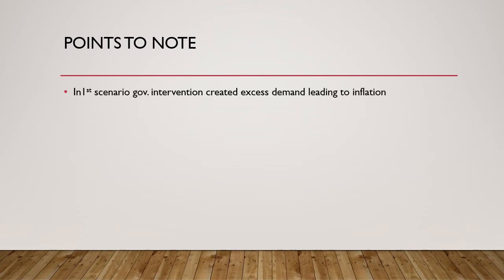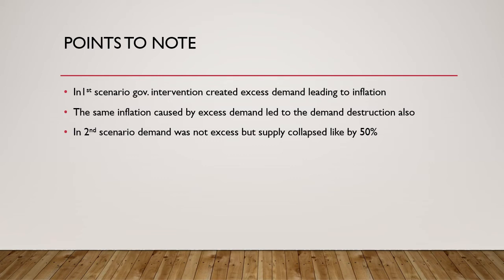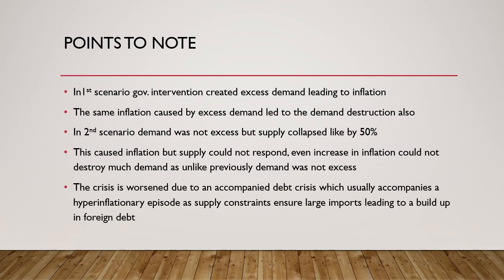Points to note: in the first scenario, government intervention created excessive demand leading to inflation, which caused demand destruction. In the second hyperinflationary scenario, demand was not excessive — instead supply collapsed by around 50%, causing inflation to spike. Even the increase in inflation could not destroy that demand, unlike previously. The crisis worsened due to an accompanied debt crisis. Generally, hyperinflationary episodes are accompanied by supply shocks and a debt or foreign exchange crisis, because since supply locally cannot cater to demand, countries start importing goods, piling up foreign debt and making the exchange rate tumble.